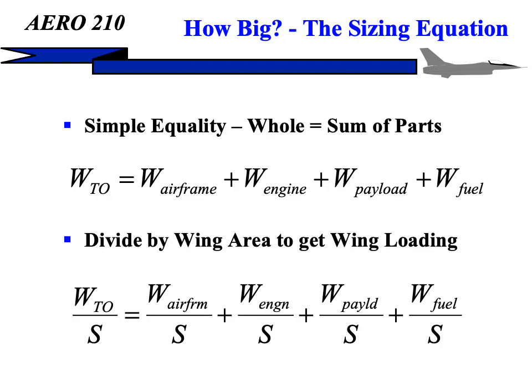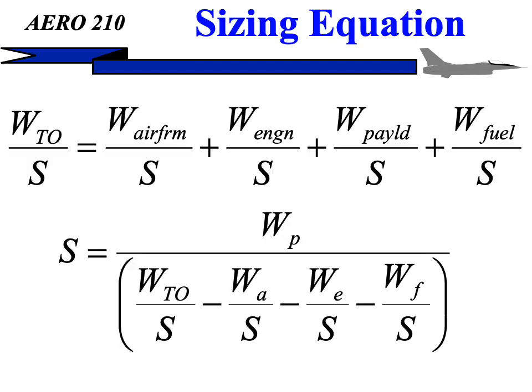The sizing equation is based on a very simple equality: the whole aircraft must be equal to the sum of the weights of each of the parts. We take these weights and divide by the wing area of the aircraft to get a parameter we can use to describe a class of aircraft rather than a single airplane, and we come up with this equation of wing loadings. The wing loading of the whole aircraft — takeoff weight divided by wing area — is equal to the sum of the portion due to the airframe, the portion due to the engine, the portion due to the payload, and the portion due to the fuel. If we solve that for the wing area, we get an expression in terms of the weight of the payload, which is specified by the RFP, and then these wing loading values for the various aircraft parts, which we will have to determine.